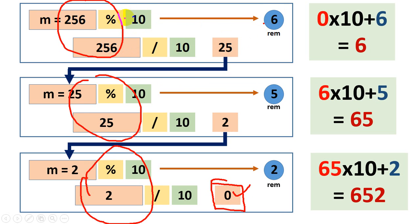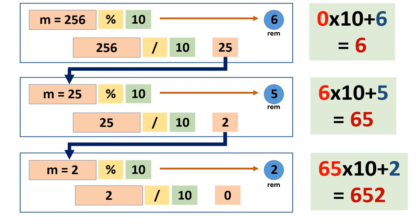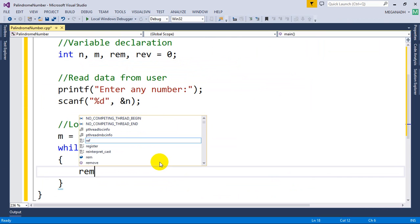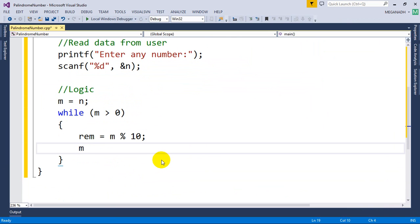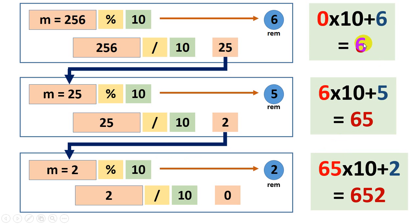The first step is we need to get the remainder. Remainder is equal to m modulo 10. Now I need to write here remainder is equal to m modulo 10 and once you get the last value remove that using m is equal to m by 10.